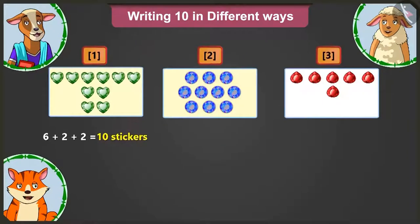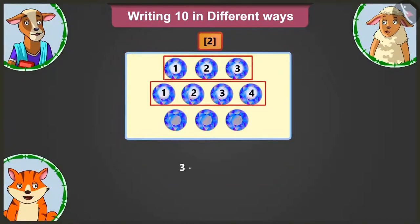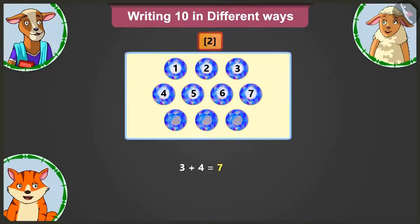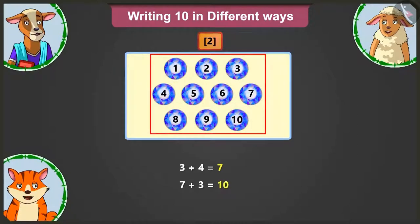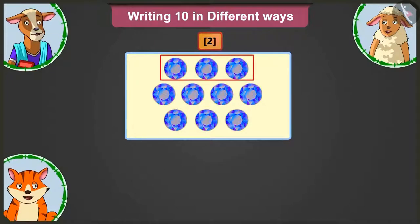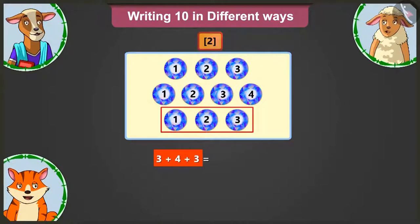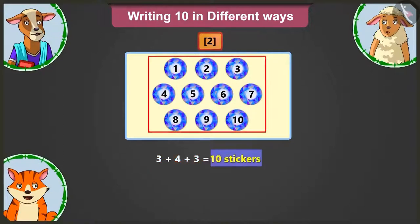Lily is asked how many stickers are on the second card. Adding four to three gives seven, and adding three to seven gives ten — so this card also has ten stickers in total. On the second card there are three in the first row, four in the second row and three in the third row. So we write: three plus four plus three equals ten stickers.